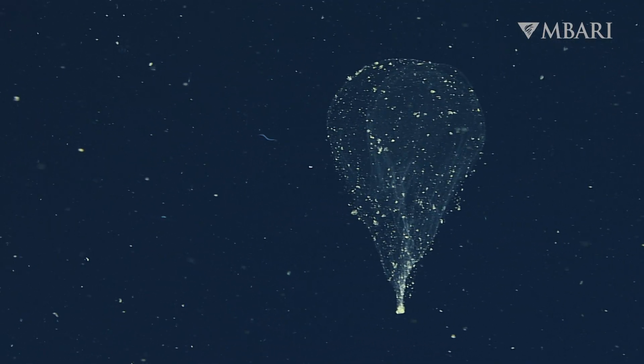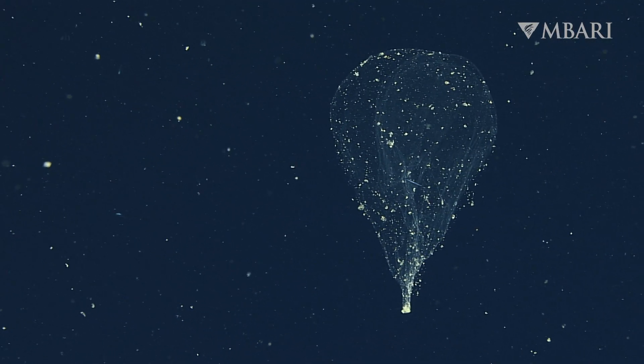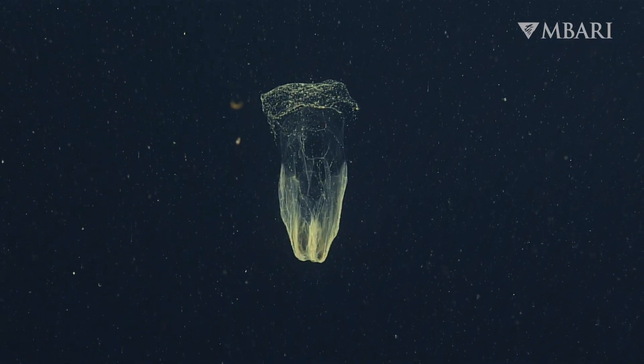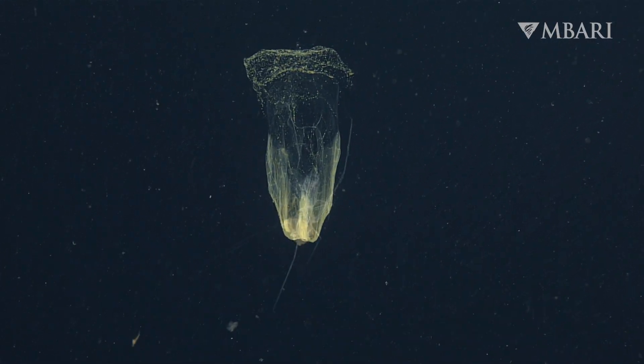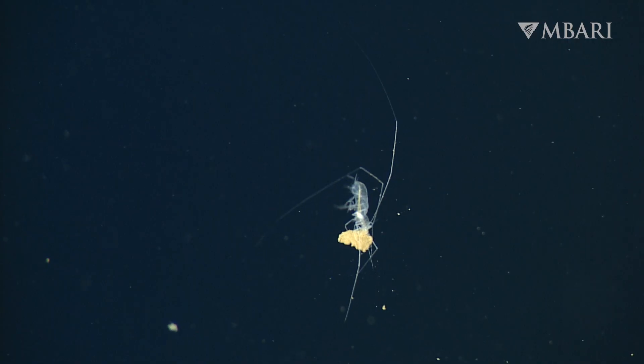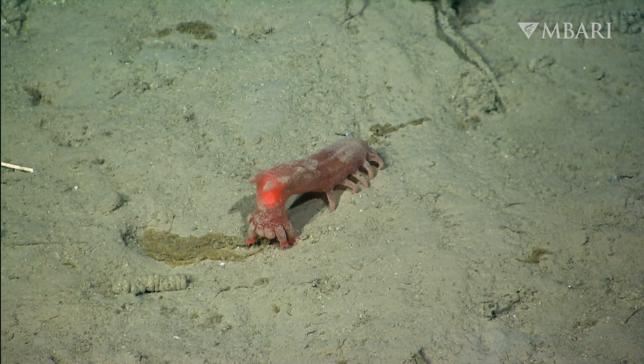Abandoned larvacean houses slowly sink to the sea floor. We call these packets of nutrients sinkers. Sinkers provide a feast for deep-sea scavengers both in the water column and on the ocean floor.